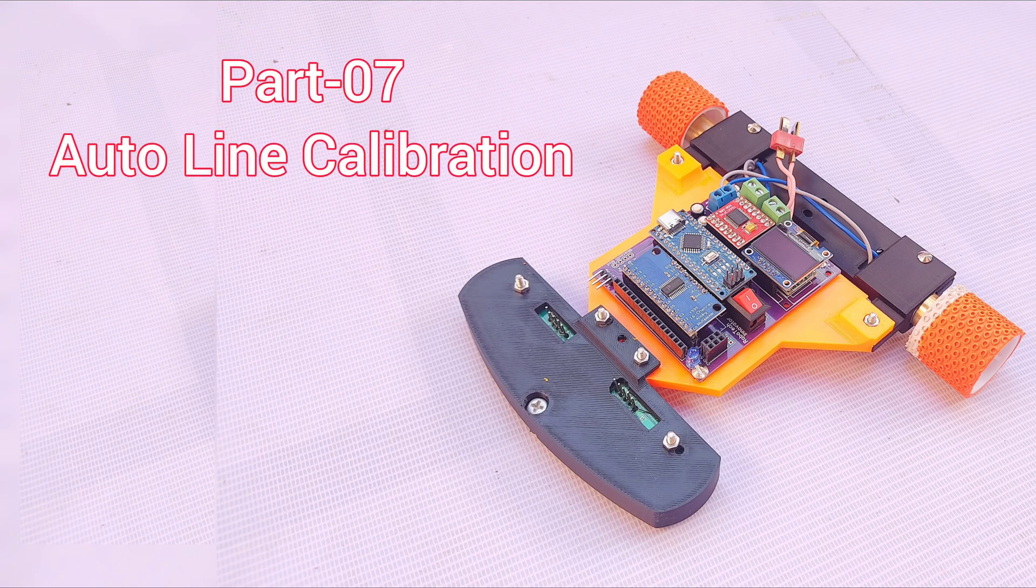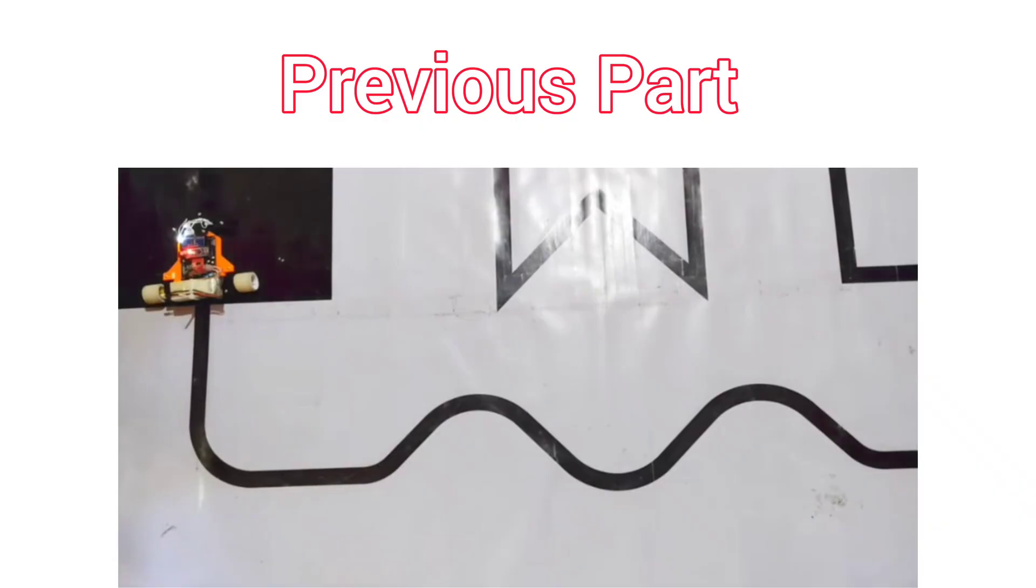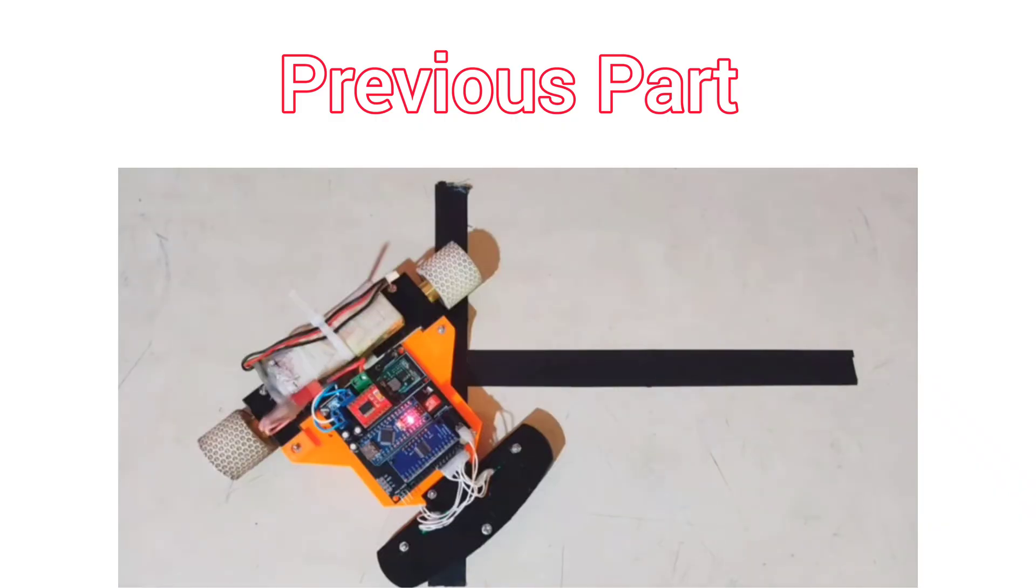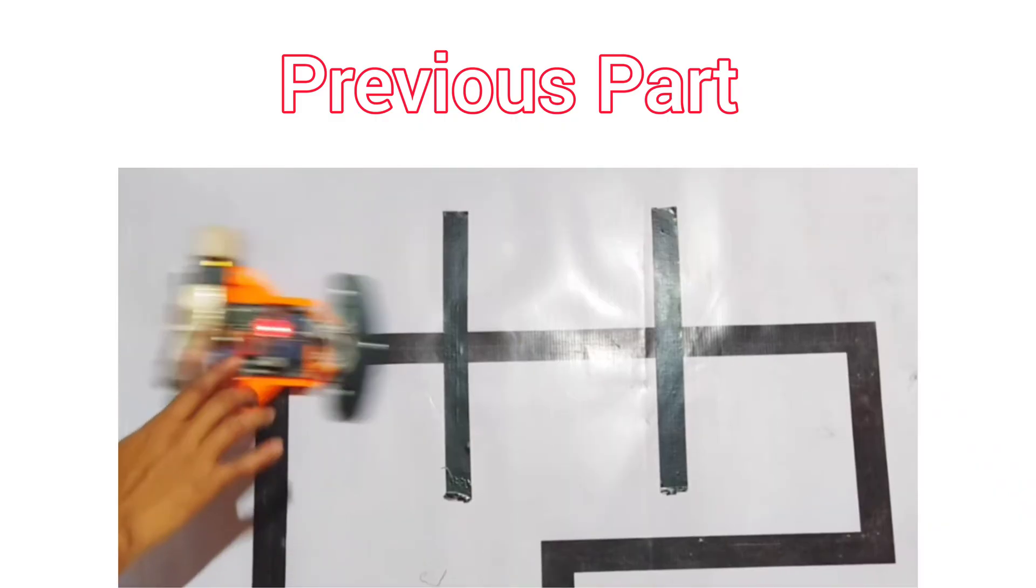Hello everyone. Welcome to part 7 of my Line Following Robot series. In the previous episode, I explained how to handle sharp turns, stop points, T-junctions, and cross intersections.